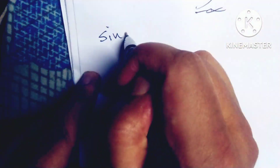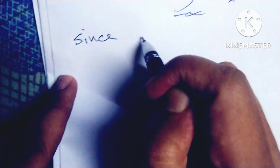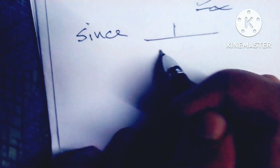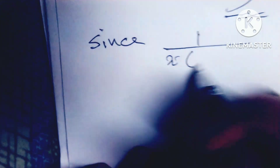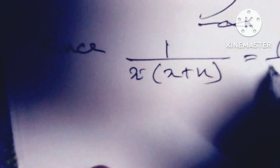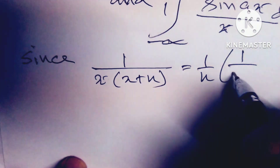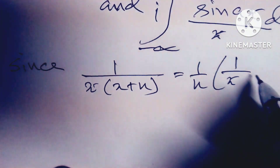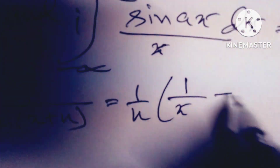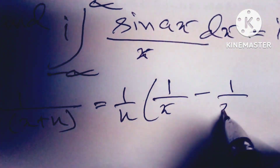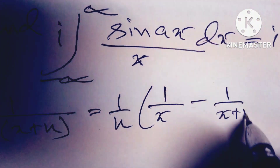Since 1 divided by x(x+n) equals (1/n) times [1/x minus 1/(x+n)], we apply this partial fraction decomposition.